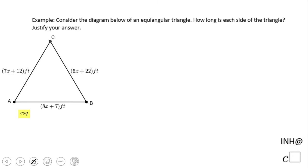Welcome or welcome back to iNeedHelpAtCSquared. In this example, we have what is called an equiangular triangle. What is an equiangular triangle? A triangle where all angles are equal, which means this triangle is equilateral.